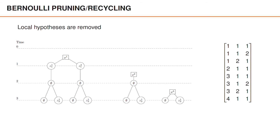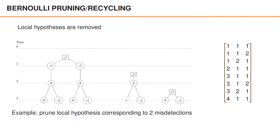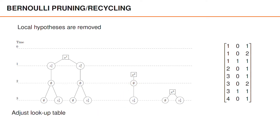Next we have the pruning or recycling of Bernoullis, which is where we remove local hypotheses. In this example, let's say that for the second Bernoulli, we prune the local hypothesis that corresponds to two consecutive misdetections. In doing so, we remove the local hypothesis and we adjust the lookup table accordingly.